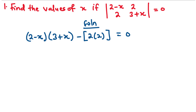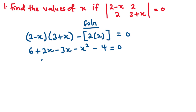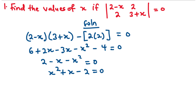Now let's multiply across. We have 2 times 3, that is 6; 2 times X, that is 2X; negative X times 3, that is negative 3X; and negative X times X, that is negative X squared. 2 times 2 is 4. So we have that equals 0. Now let's simplify: 6 minus 4 is 2; 2X minus 3X is negative X; and then negative X squared equals 0. So we transpose all the terms on the left-hand side to the right-hand side, and we have X squared plus X minus 2 equals 0.